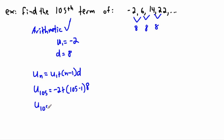Well, then I can say that u105 equals negative 2 plus, and this here is 104. This is 104 times 8. And now I need to know what 104 times 8 is. This would be 832, I believe. So 832 would be 104 times 8. Add to that negative 2, and that's your 105th term.